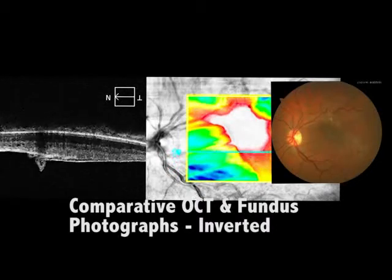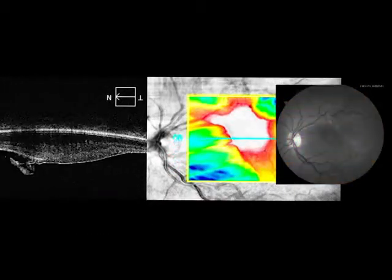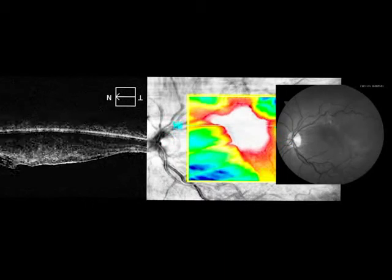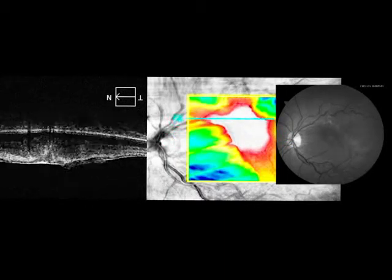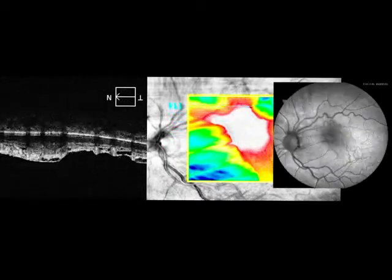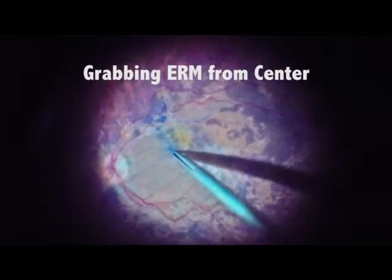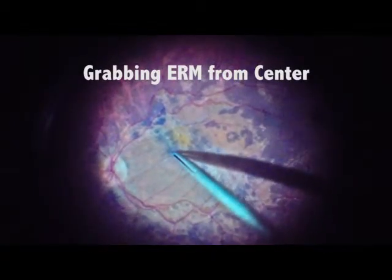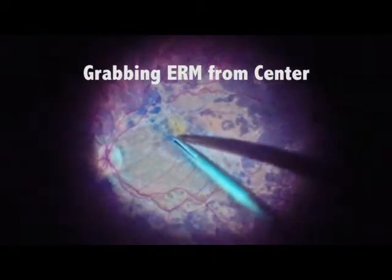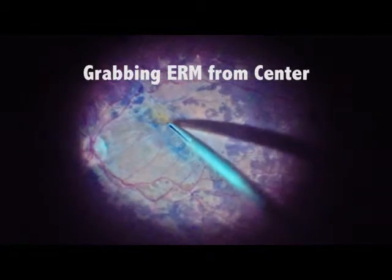A comparative inverted OCT and fundus photograph is superimposed to help us decide where to start the epiretinal membrane peel. The autofluorescence shows very distorted retinal vessels, so we decided to peel the epiretinal membrane from the foveal area because we could use the vectorial side forces to spread it away from the retina evenly.